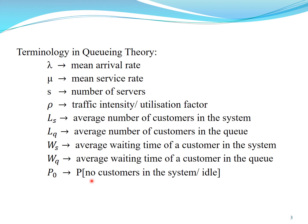Some terminologies in queuing theory: Lambda is the mean arrival rate. Mu is the mean service rate. S is the number of servers. Rho is the traffic intensity or utilization factor. Ls is the average number of customers in the system. Lq is the average number of customers in the queue. Ws is the average waiting time of a customer in the system. Wq is the average waiting time of a customer in the queue. P0 is the probability of no customers in the system, meaning the system is idle with no queue.